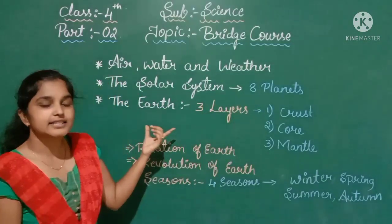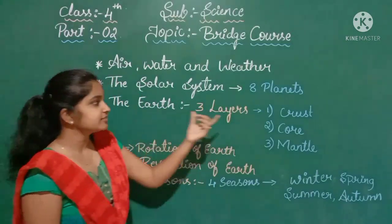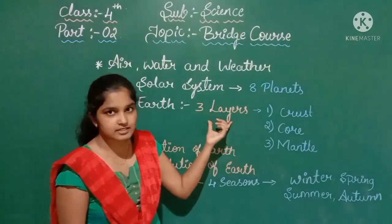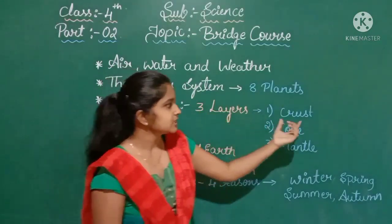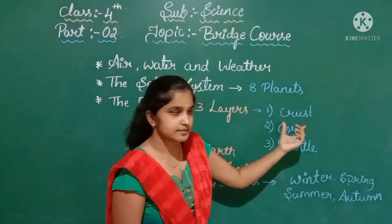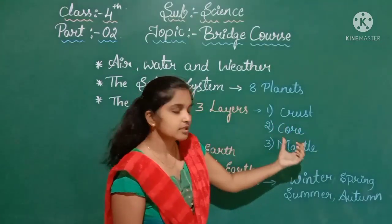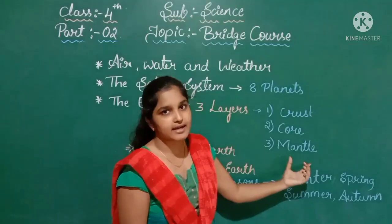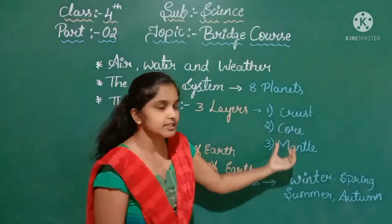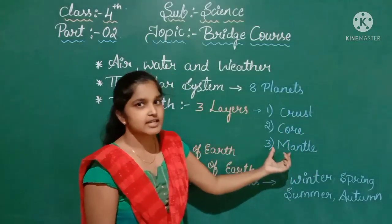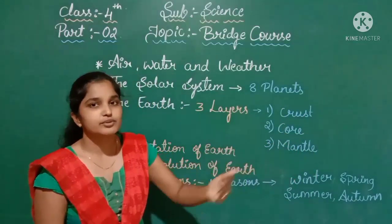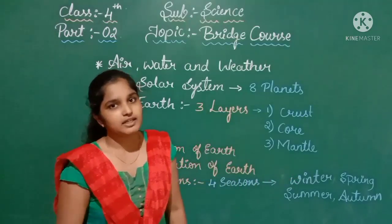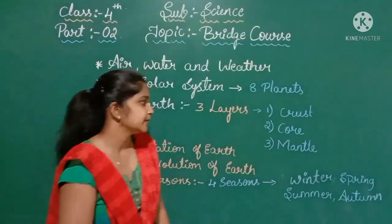Earth is also a planet, and it is made up of three layers — crust, mantle, and core. You have already learnt about this, and in fourth standard you will learn about the layers of the Earth in more detail.